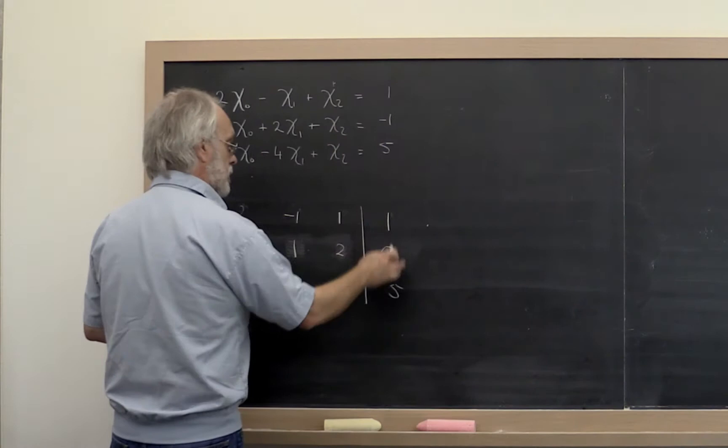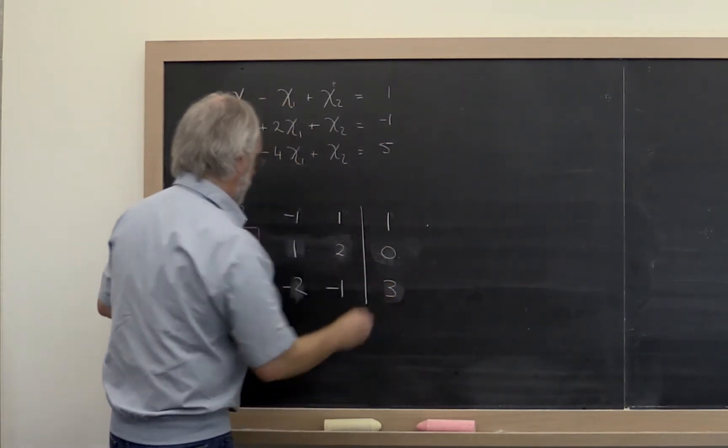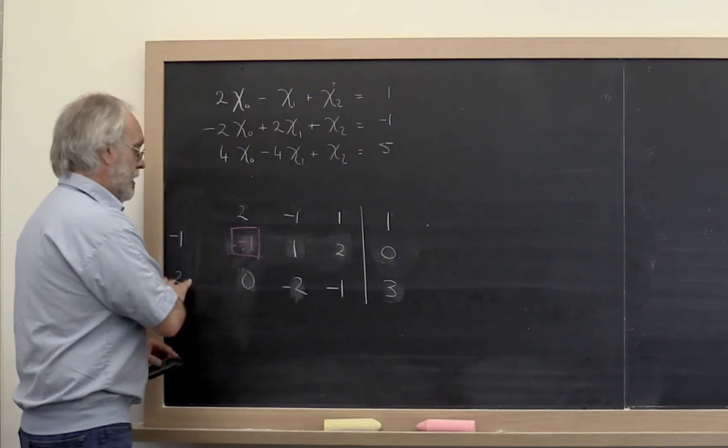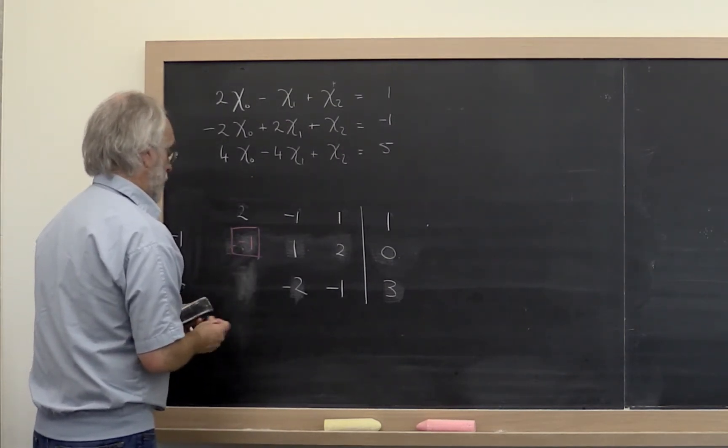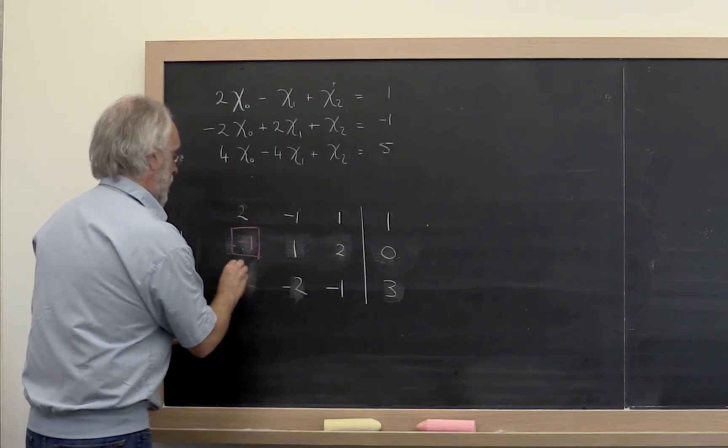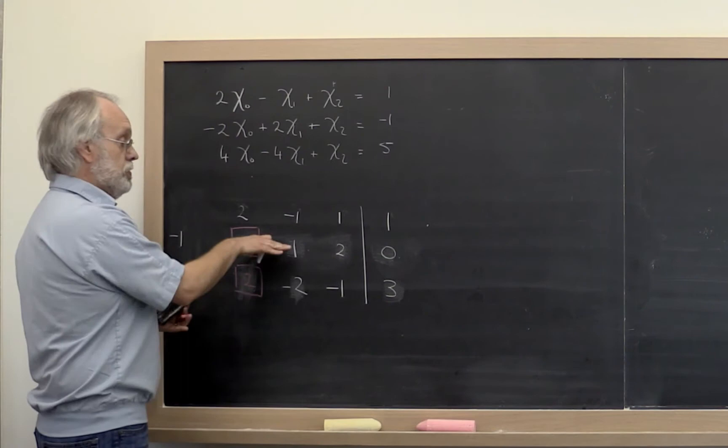And then 2 times 1 subtracted from 5 leaves you with a 3. Then you take that multiplier and store it over the 0 that you created. And then you move on to the next equation.